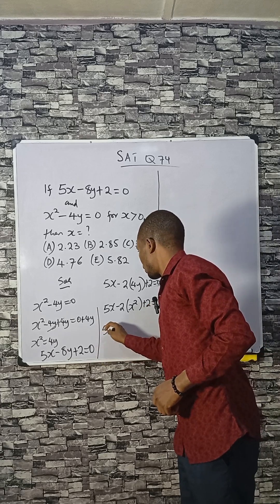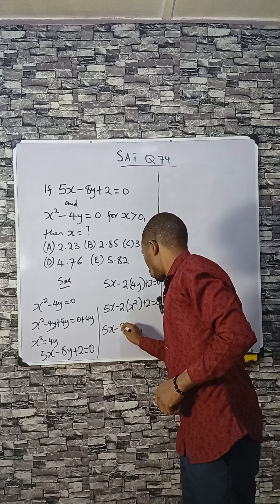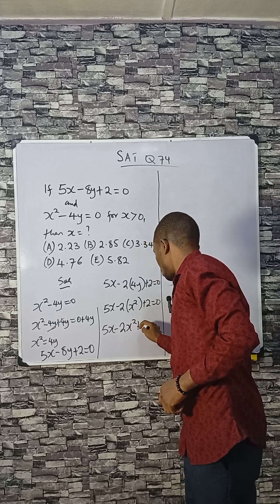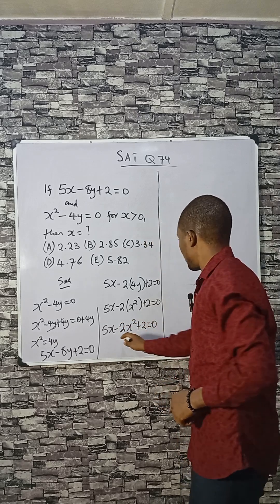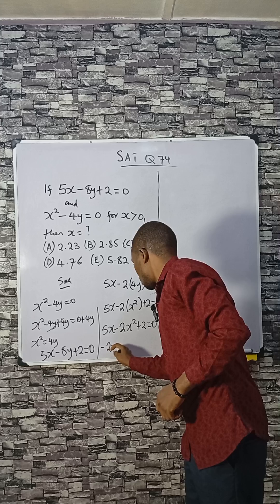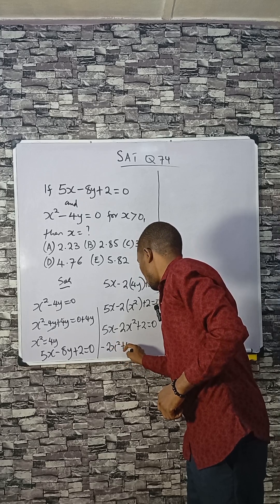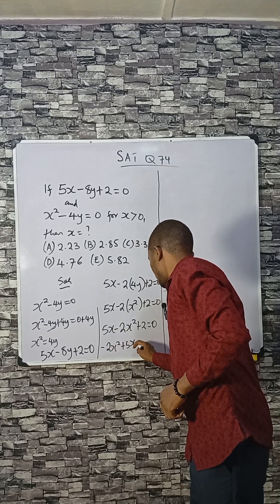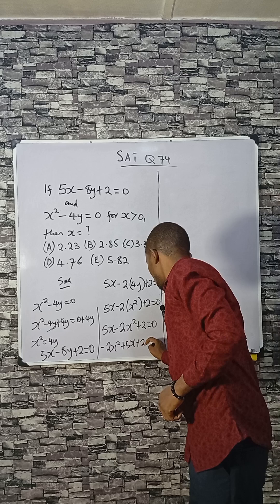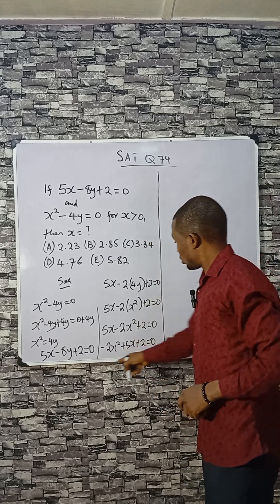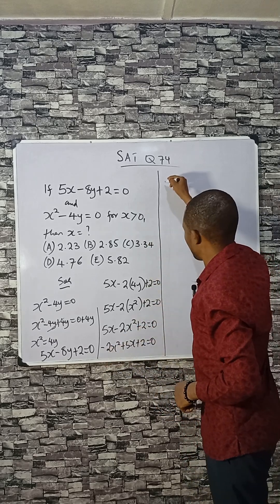We can rearrange this to have -2x² + 5x + 2 = 0. Then we can multiply by -1 to take care of this minus sign, to have 2x² - 5x - 2 = 0.